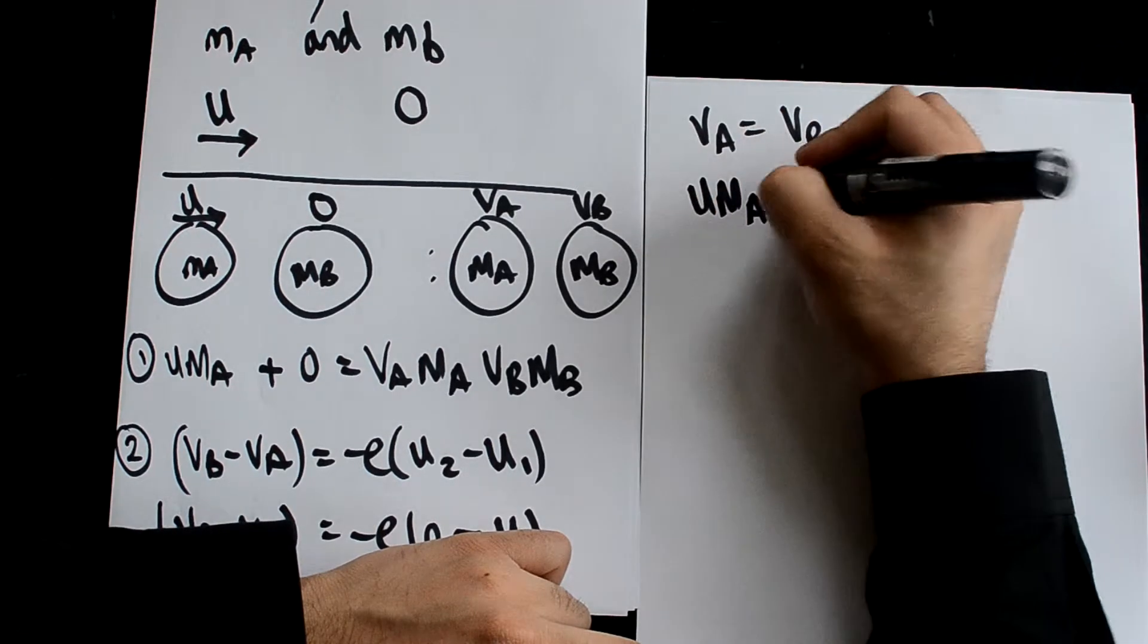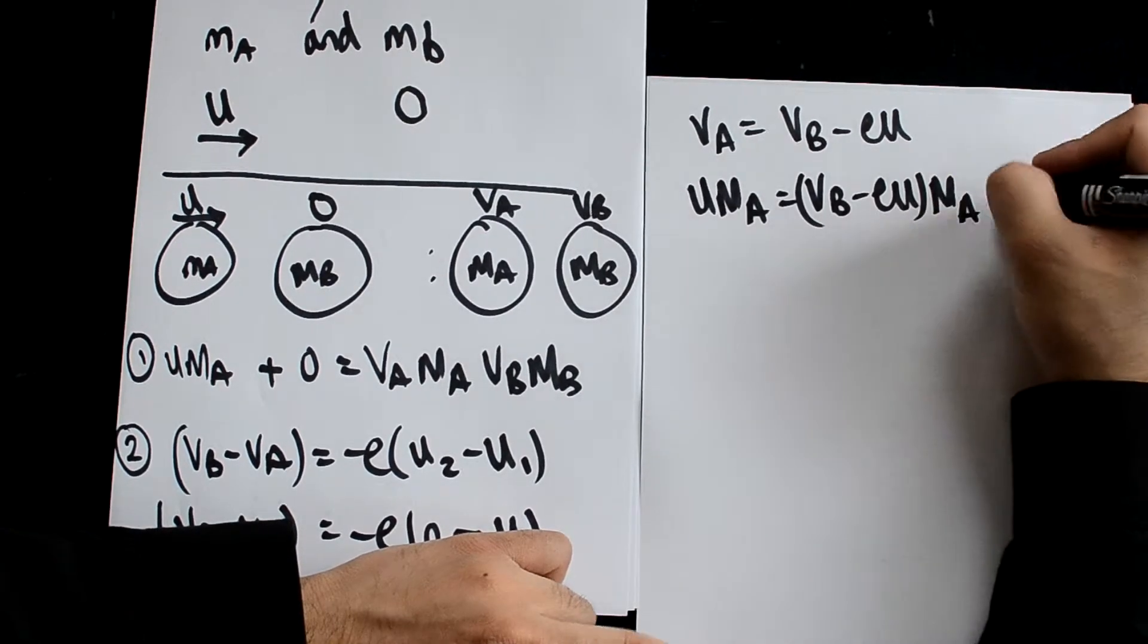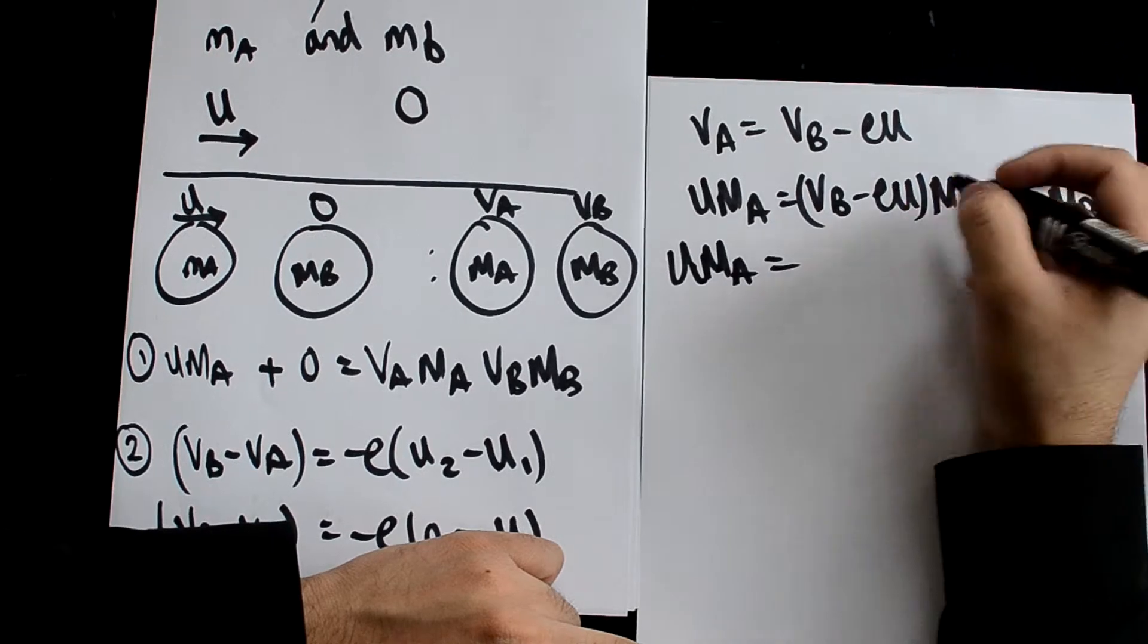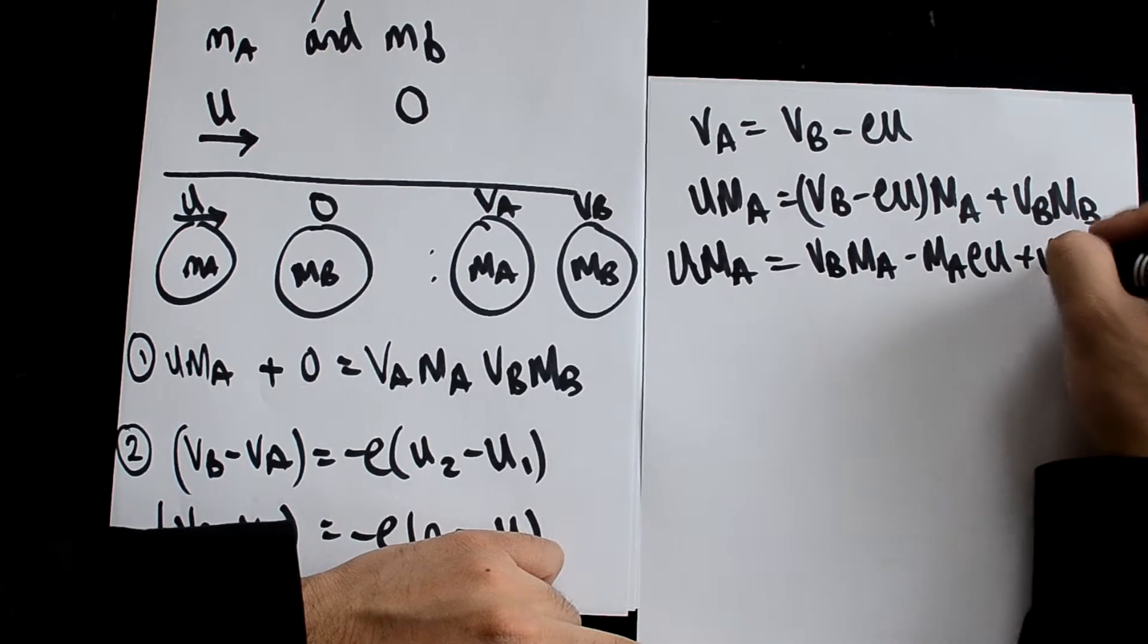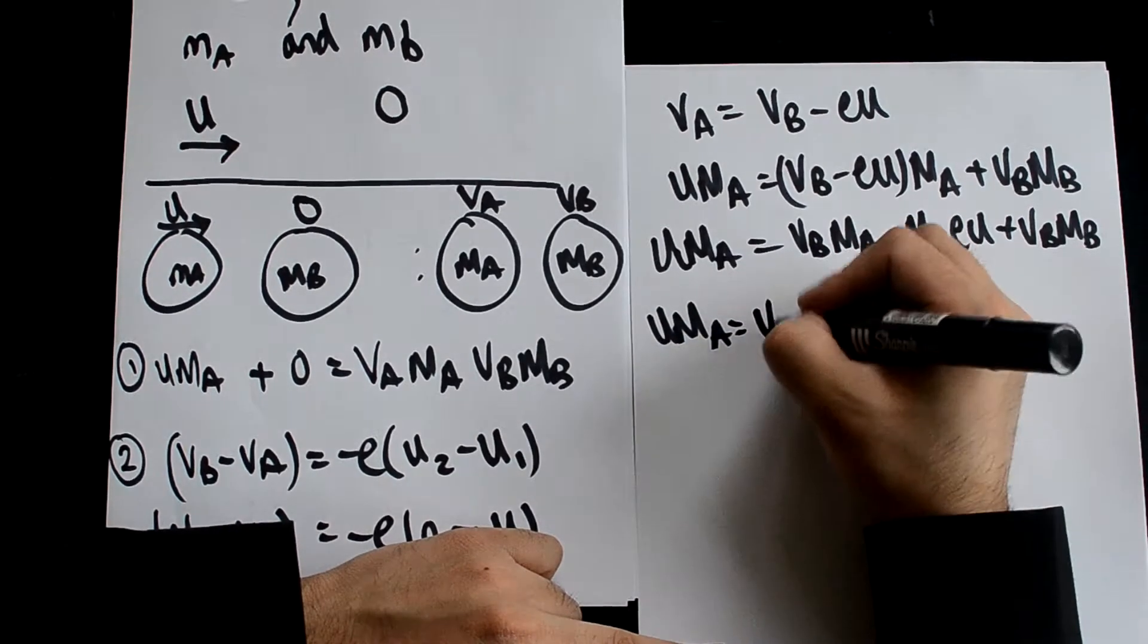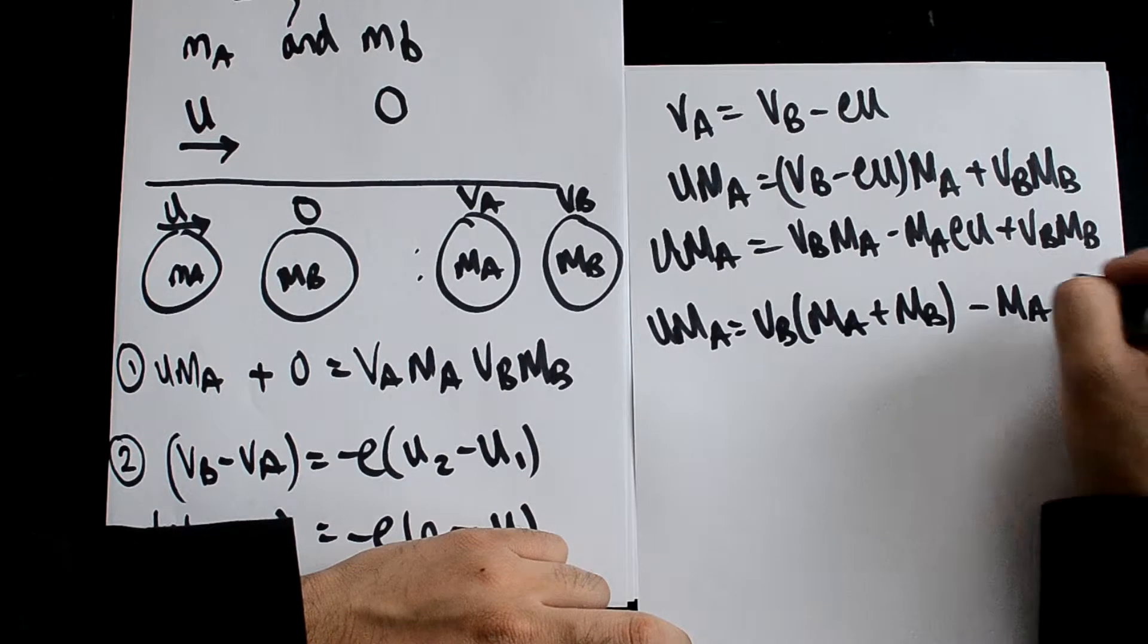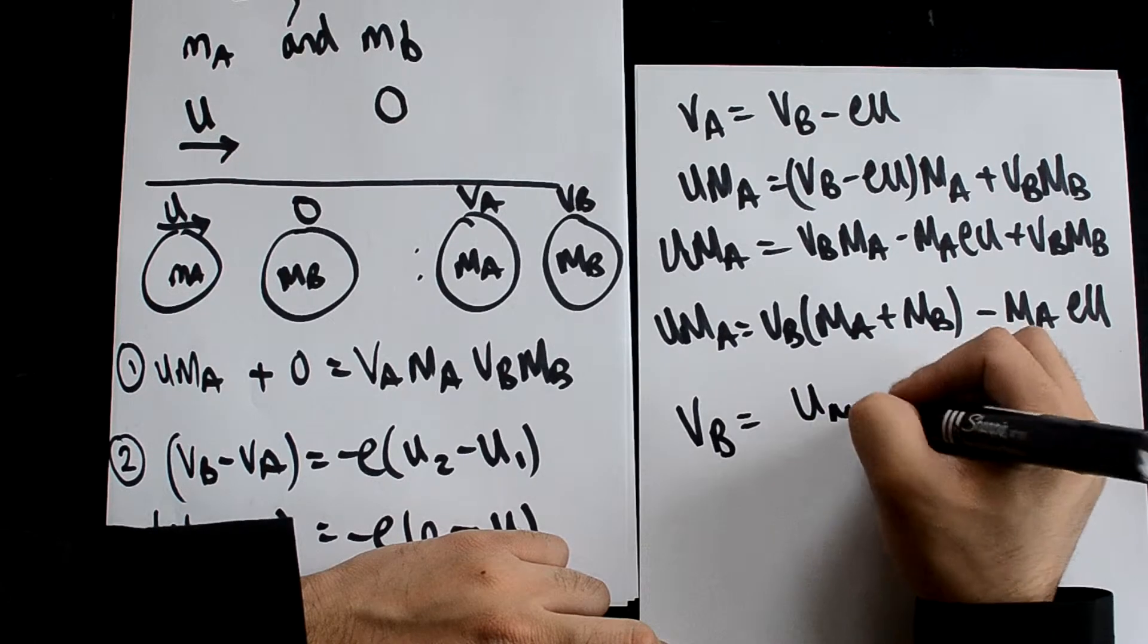Now we should get u ma equals (vb minus eu)ma plus vb mb. Again, simplify this out. We should have vb mb minus vb mb - getting all the vb's in terms of each other, you get vb(ma plus mb) equals ma e u plus u ma.